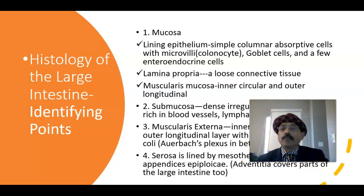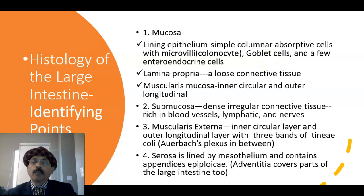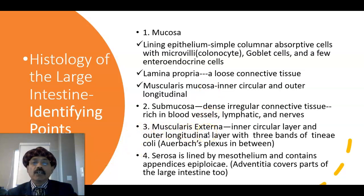So these are the identifying points you have to note. Lining epithelium: we have plenty of goblet cells, and the number of goblet cells increases in the lower part of the large intestine. As a whole, goblet cell number is more than that of the small intestine. We have a few enteroendocrine cells. We have the columnar absorptive cell, also called colonocytes. Then lamina propria, muscularis mucosa, submucosa, muscularis externa. We have the parasympathetic nerve plexus between the muscle, called the myenteric plexus or Auerbach's plexus. This is a derivative from the neural crest cell, and it is essential for the peristaltic movement.